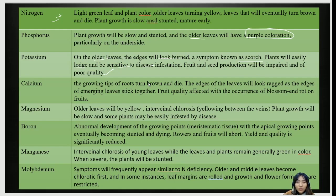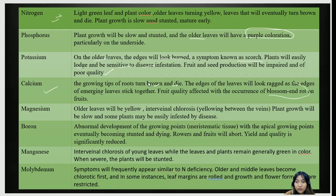For calcium, the growing tips of roots turn brown and die. The edges of leaves look ragged as the edges of emerging leaves stick together. Fruit quality is also affected. A main disease called blossom end rot is usually caused by calcium deficiency — this is a very important visual disorder, so please remember it.